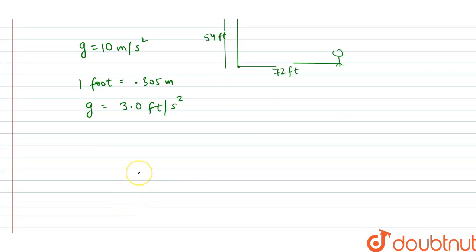So now we have to find the time in which the packet will hit the ground. We have s = ut + (1/2)at². After putting the values, s, that is